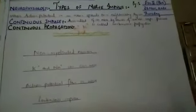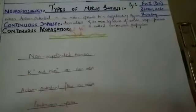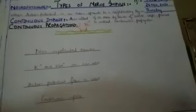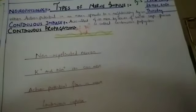Hello students, how are you all? Today the topic is types of impulse and this is the part of neurophysiology in which we will study the neuron physiology.